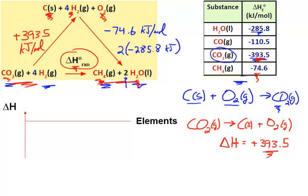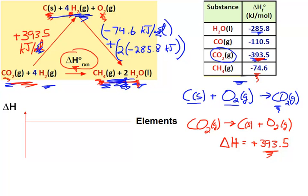Now I'm going to add these two values together to get the total energy released to form the products. Because I'm doing one mole of decomposing CO2 and one mole forming methane, the mole values cancel out. So I have a total kilojoule value for the energy released to form the products, and a total kilojoule value for the energy required to decompose the reactants to their elemental state — which is always zero for elements in their elemental state.